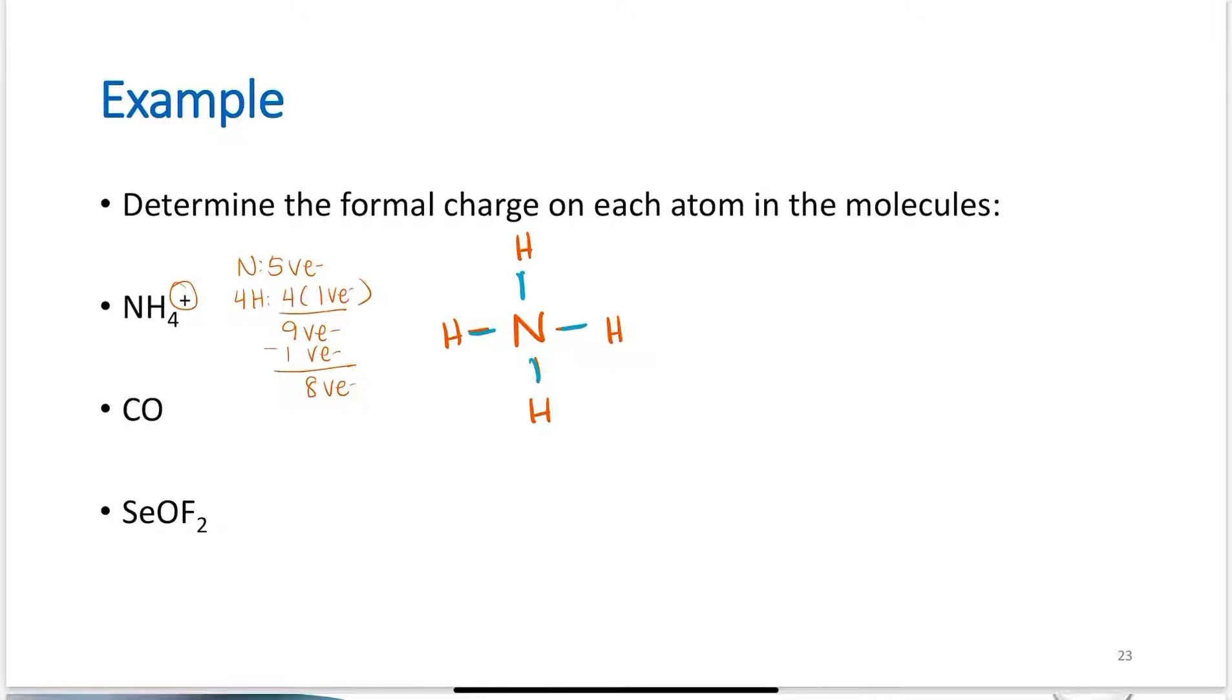Now, determine formal charge. Hydrogen has 1 valence electron. Minus, each hydrogen has 1 bond. So, minus 1 for 1 bond gives me an overall 0 charge. Nitrogen: 5 valence electrons, has 4 bonds. Overall, plus 1 charge, which equals my overall plus 1 charge here.